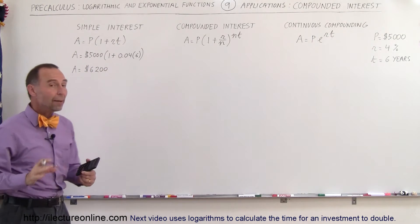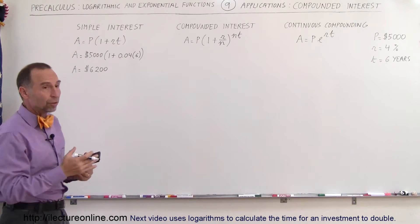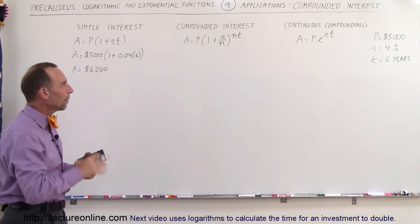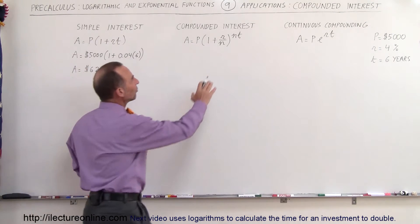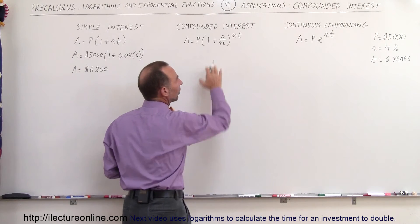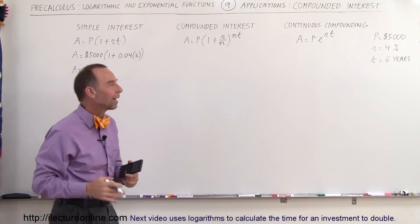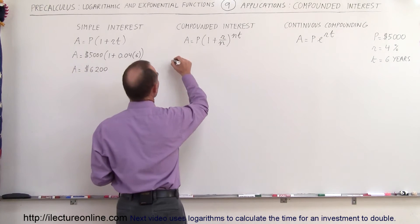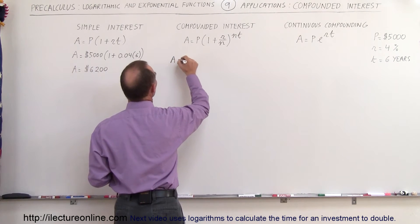Now when we compound, we get more interest because you begin to earn interest upon interest. So N is the number of times that you compound, and typically in the bank it does it daily, so N would then be 365 times per year. So the amount that you end up with is equal to the principle invested,